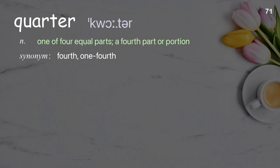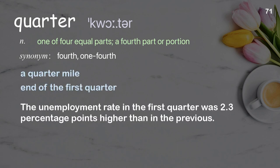Quarter: One of four equal parts, a fourth part or portion. Examples: A quarter mile, end of the first quarter. The unemployment rate in the first quarter was 2.3 percentage points higher than in the previous quarter.